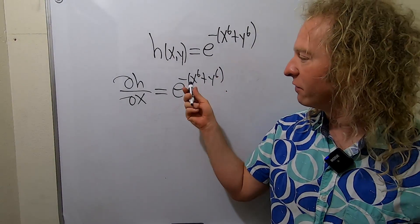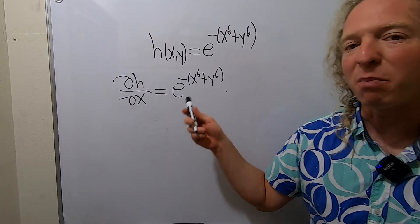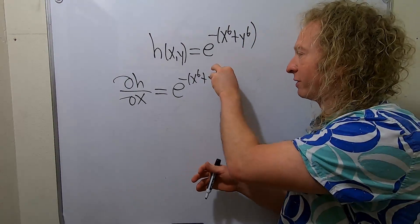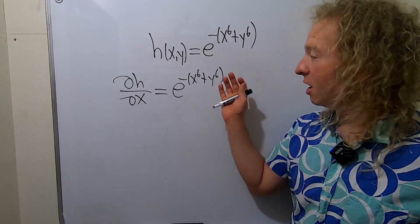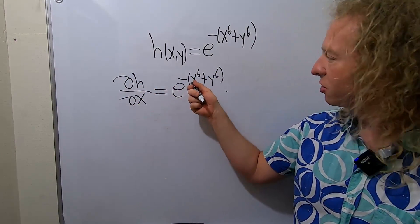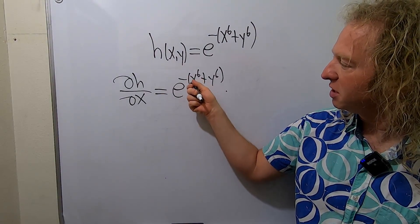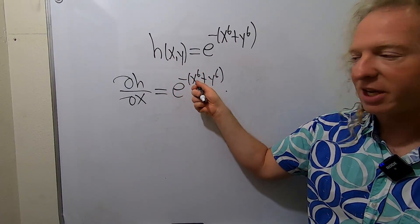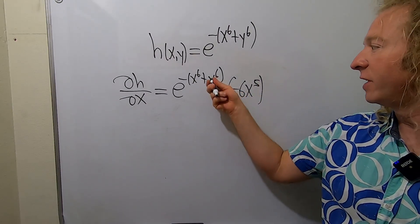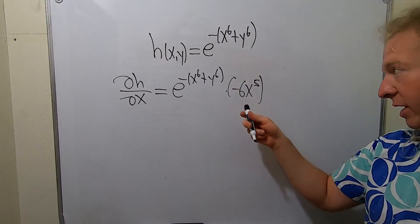When we're taking the derivative of the inside, we have to keep in mind that this is a partial derivative. The derivative of Y is going to be 0. In particular, the derivative of y^6 is 0. Everything else is constant when you take a derivative with respect to X. So all we do is take the derivative of this piece here. It'll be -6x^5. And the derivative of this is 0, so we won't write it.